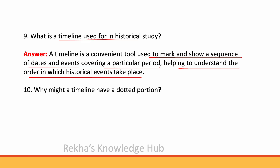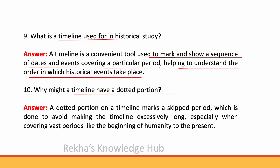Why might a timeline have a dotted portion? A dotted portion on a timeline marks a skipped period, which is done to avoid making the timeline excessively long, especially when covering vast periods like the beginning of humanity to the present.